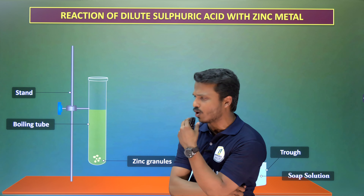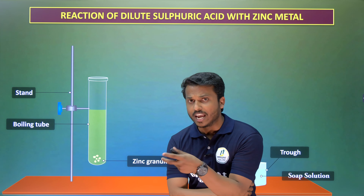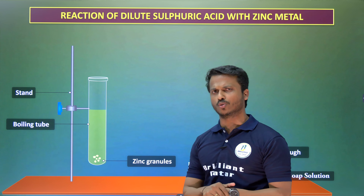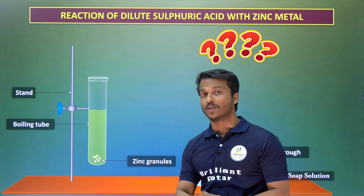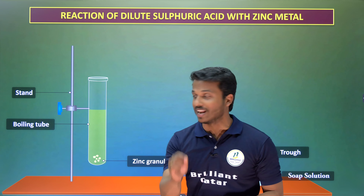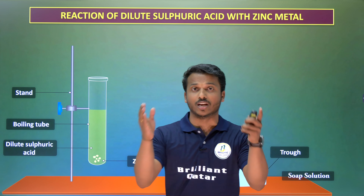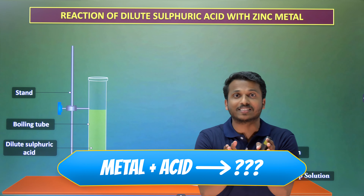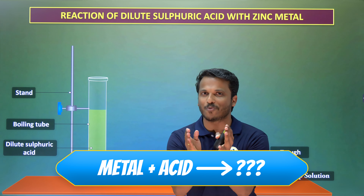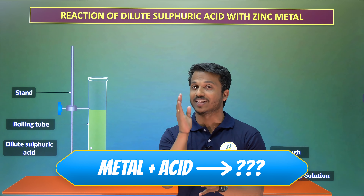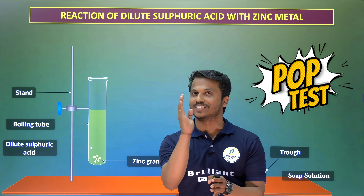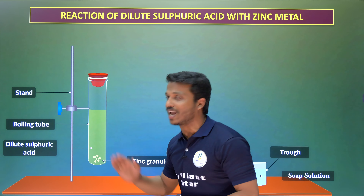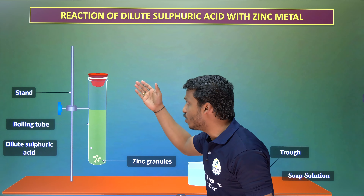Do you think any gases can form, or any precipitate? What can happen in this reaction? Zinc is a metal and H₂SO₄ is an acid — what happens when a metal reacts with an acid? That is what I want to show by this reaction, called the pop test.